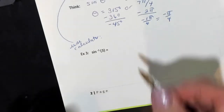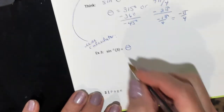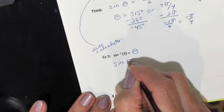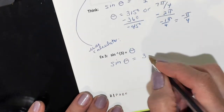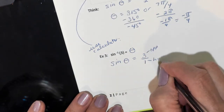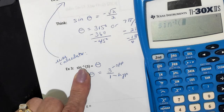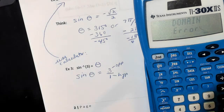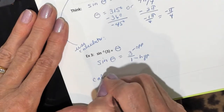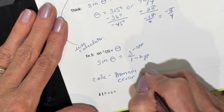Last sine problem: inverse sine of 3 equals theta. It means the sine of what angle gives you 3. Sine is opposite over hypotenuse, so let's write that as 3 over 1. If you put this in your calculator — second function, sine of 3 — your calculator says domain error. That means there's no solution.